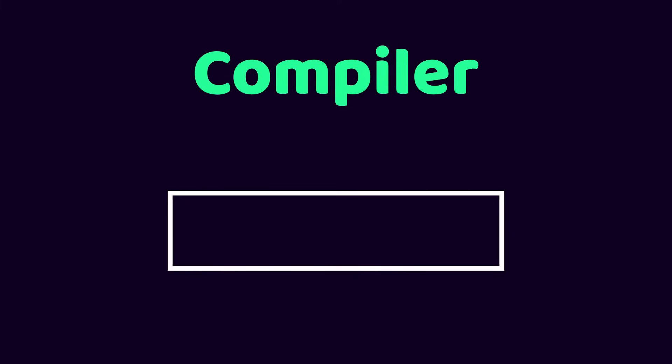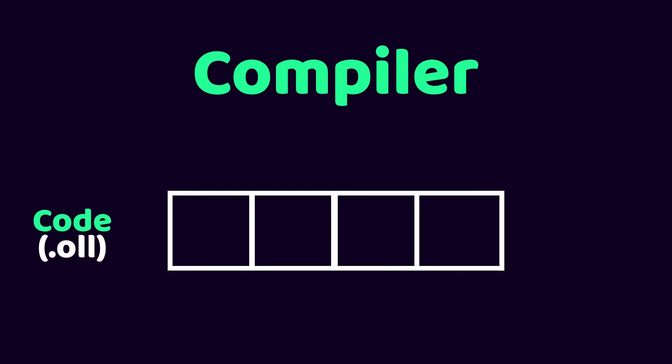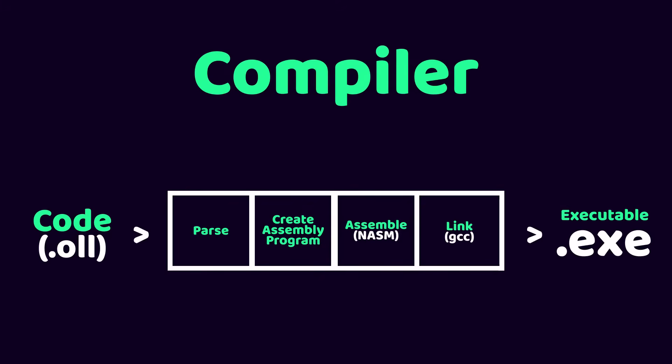The compiler we are building consists of four main building blocks. The first step is taking the input code and parsing it to a list of tokens. Second, we will convert that list of tokens to a correct assembly program. Third, we will be using the NASM assembler to assemble our assembly program file into an object file. Our fourth and final step is to use a linker such as GCC to link and create our final executable.